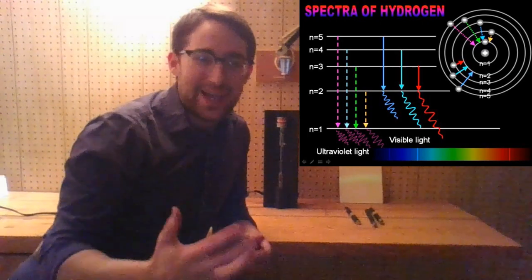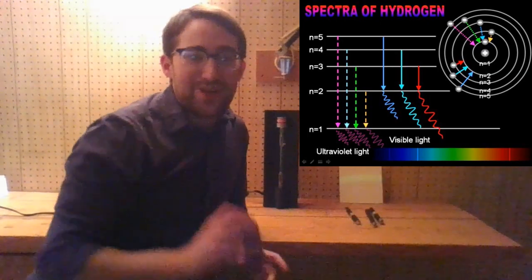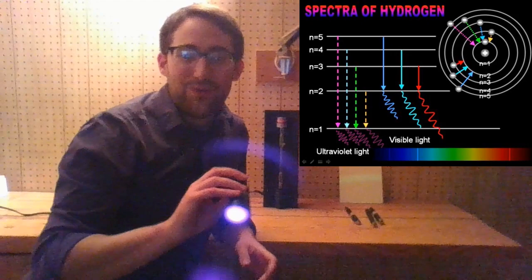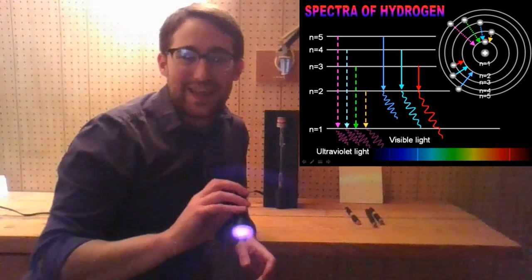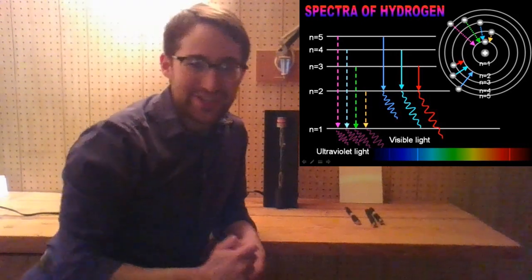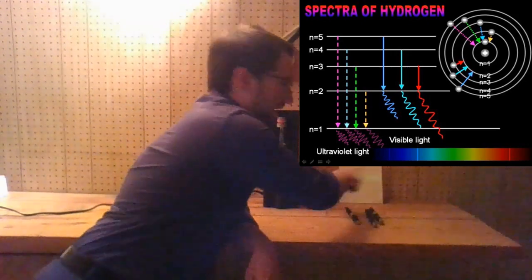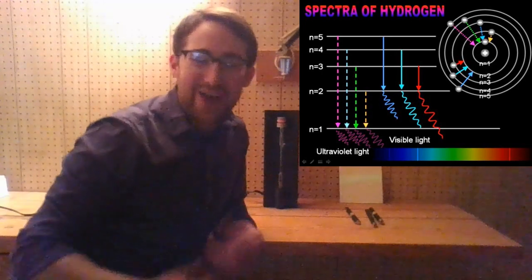Higher energy for light means farther down the rainbow. So purple, like violet light and blue light, is high energy. In this case, the color I'm getting back out is green, so we've lost a little bit of energy in the process, which is kind of interesting. So we can put in electricity to get this to happen. We can put in light to get this to happen.